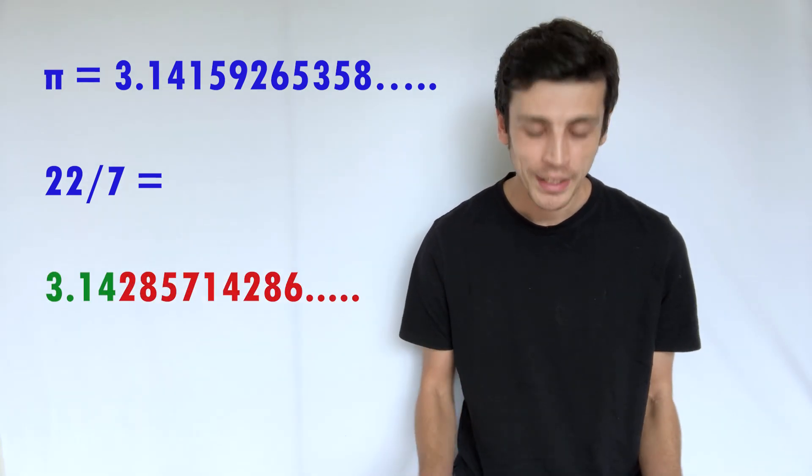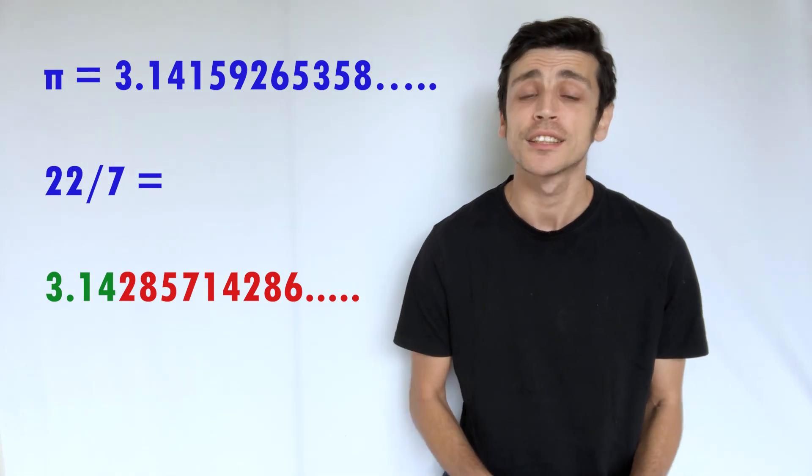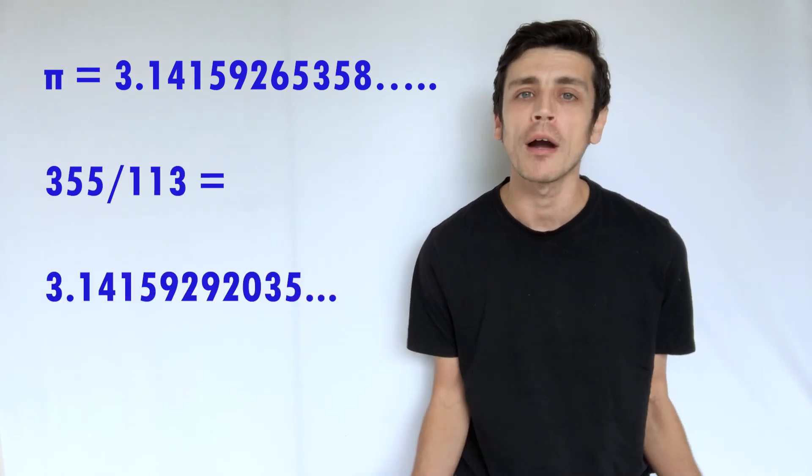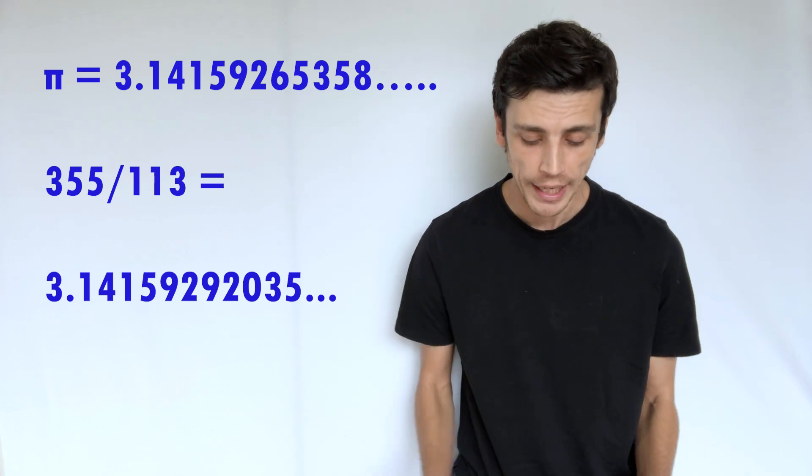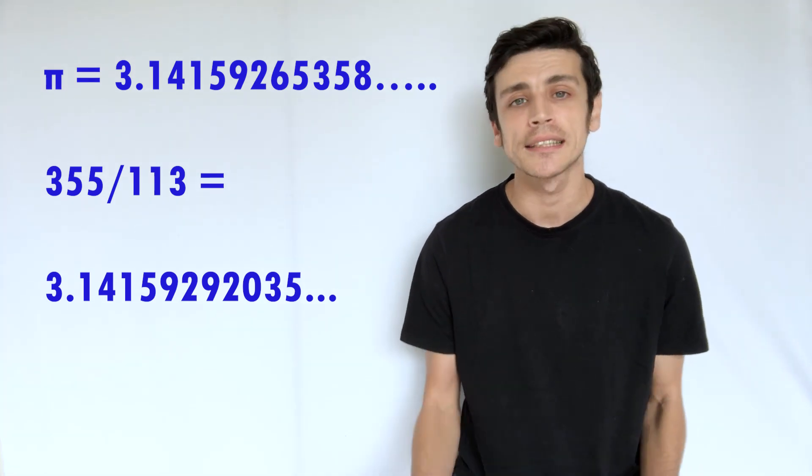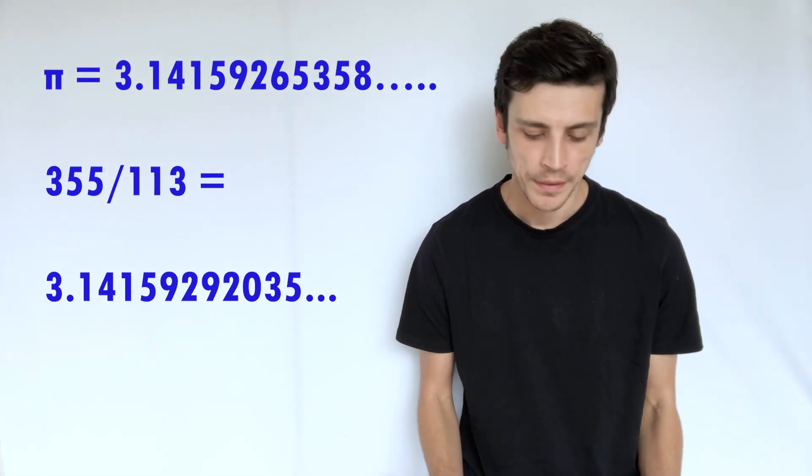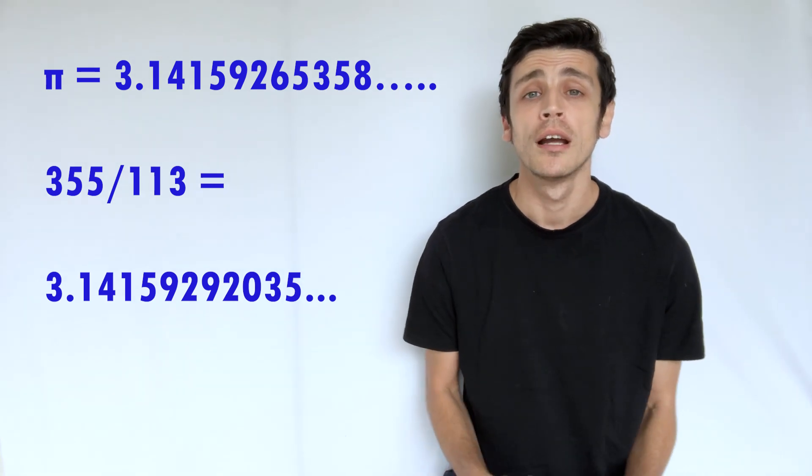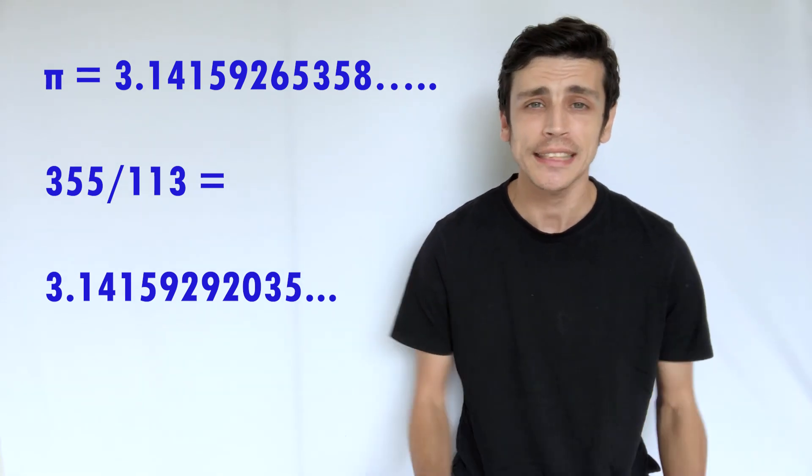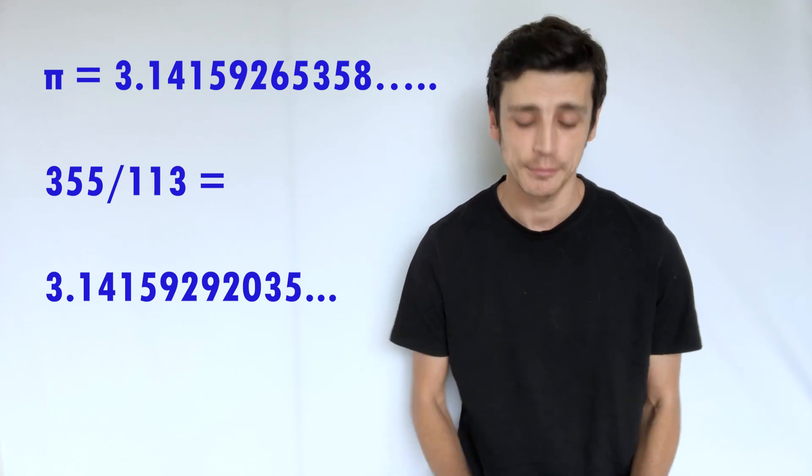But if we look at it, it only actually gets to the second decimal place. So we have 3.14, which is the same as what pi is, but then the next number is 2, which is different to what we have in pi. So this actually only represents it to the second decimal.